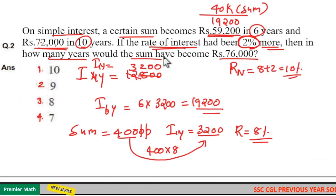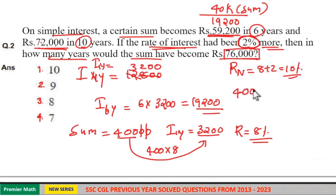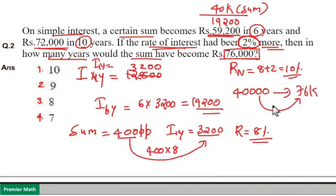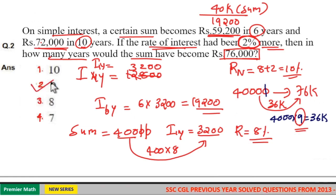We need to find in how many years the sum becomes Rs. 76,000. The difference is Rs. 36,000. Here, 10% of 40,000 is 4,000. Then 4,000 times 9 equals 36,000, which means in 9 years the sum will become Rs. 76,000. So option 2 is your answer.